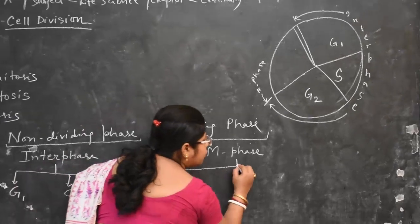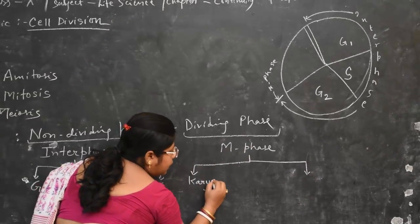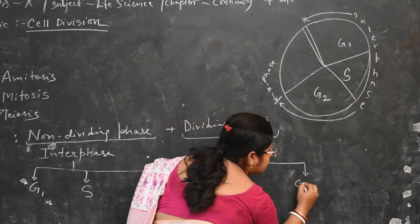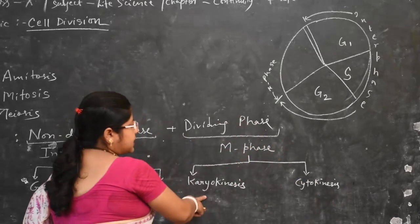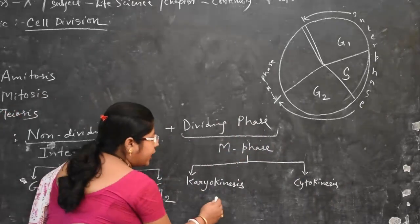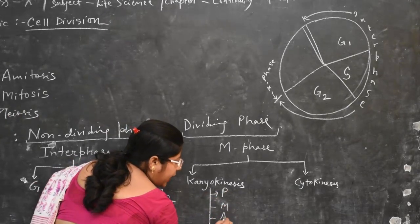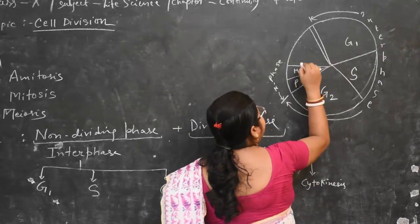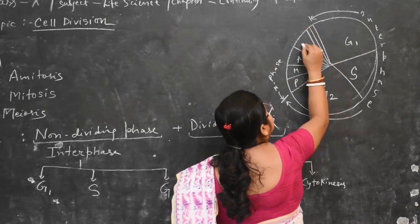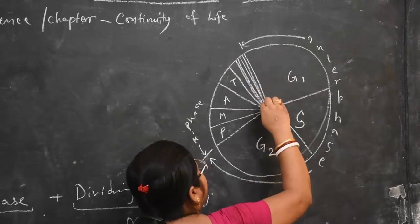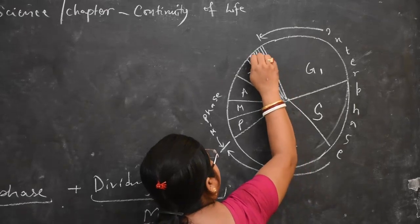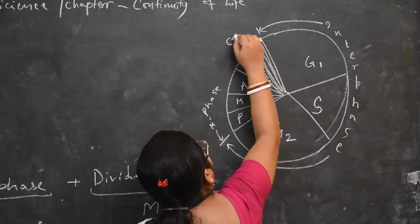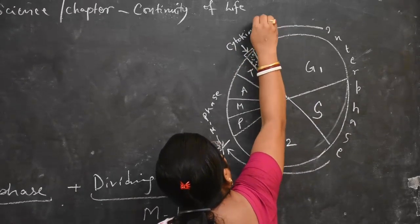The M-phase, known as Mitotic Phase, is divided into two parts: Karyokinesis and Cytokinesis. Karyokinesis is the nuclear division, which includes Prophase, Metaphase, Anaphase, and Telophase. After Telophase, we have Cytokinesis. Cytokinesis is not strictly part of M-phase, but without it, M-phase is incomplete for a cell to divide into two.